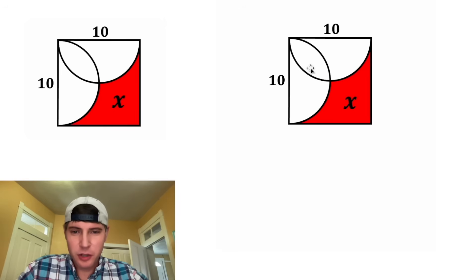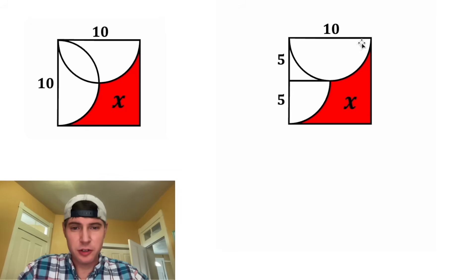Let's copy it down and focus on this left semicircle. Let's cut it in half and split this into 5 and 5. Then let's focus on this top semicircle and cut it in half and make this 5 and 5.